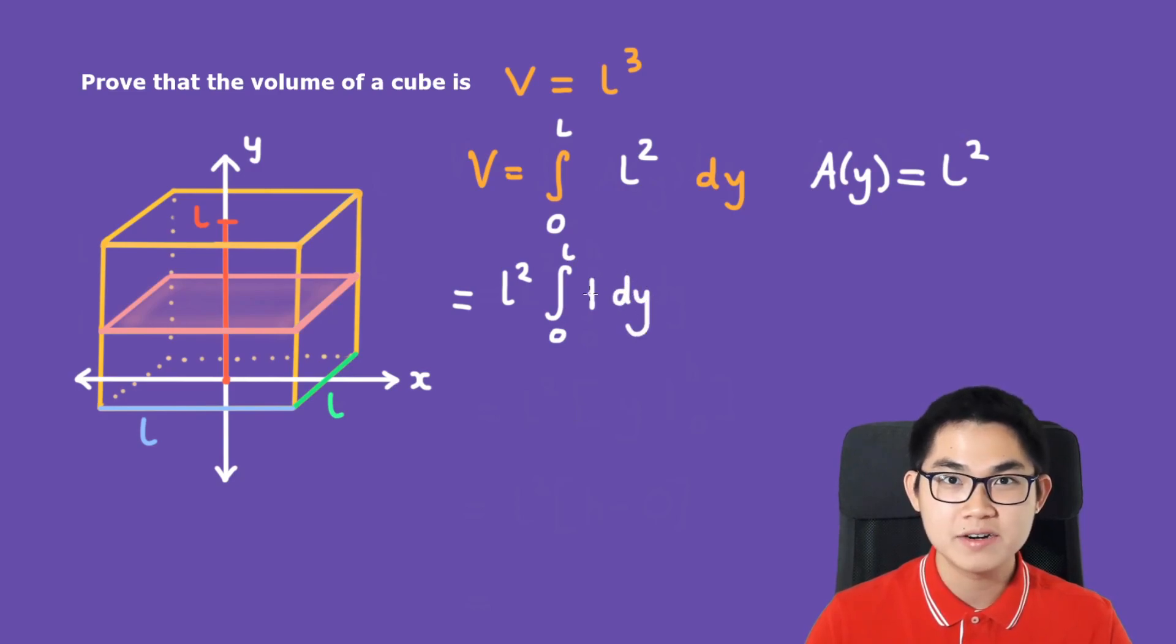And that gives us L to the power of 2 times the integral from 0 to L of 1 dy. And why is it 1 here? Well, because in here, L to the power of 2 can be rewritten as L to the power of 2 times 1, right? So when you factor out the L2, you still have the 1 inside the integral.